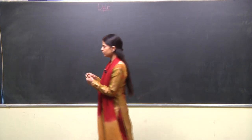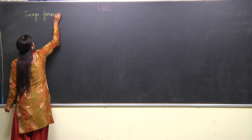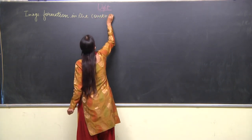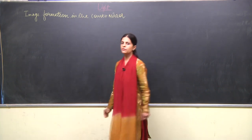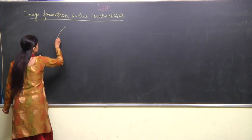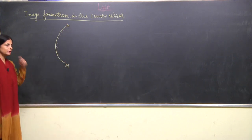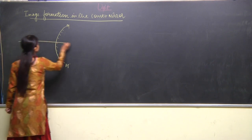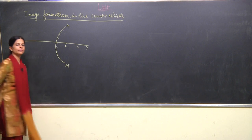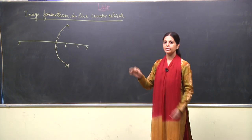Now we will discuss the image formation in the convex mirror. When we draw a convex mirror, MM dash is the reflecting surface, this is the principal axis XY, and then we have the focus and the center of curvature. The focus and center of curvature of the convex mirror are at the back side.